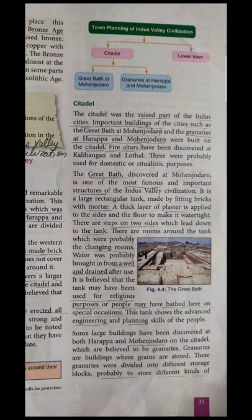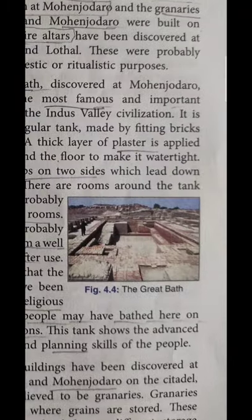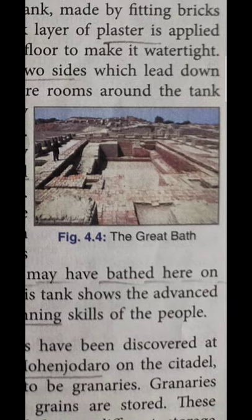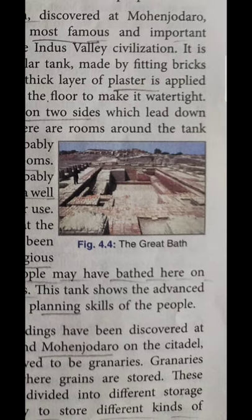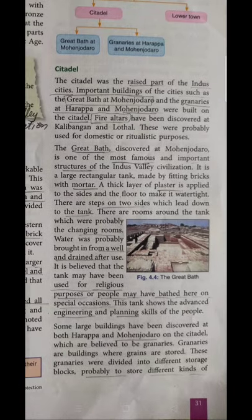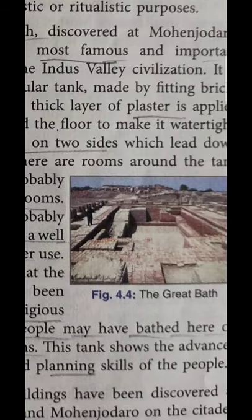What is included in the Citadel? The Great Bath is there, which is considered a raised part of the Indus cities and the most important building of the Indus Valley Civilization. Why do they use this Great Bath? It is rectangular in shape and its structure is like a swimming pool — that is why it is called the Great Bath. It is at Mohenjodaro.